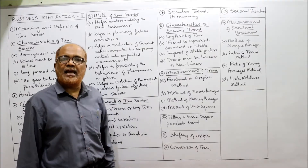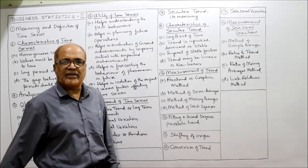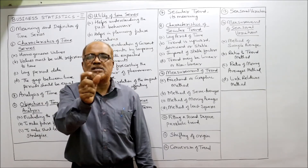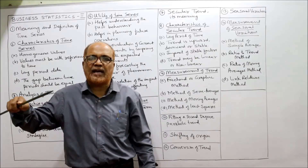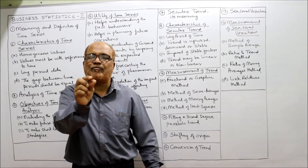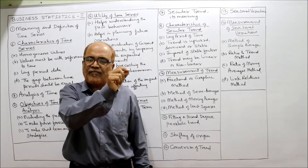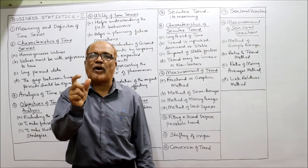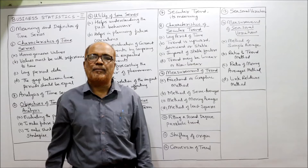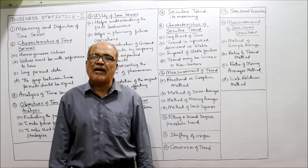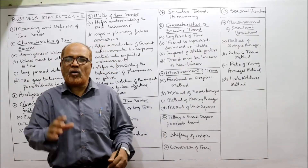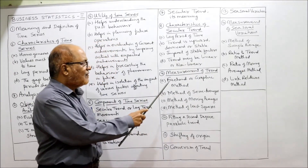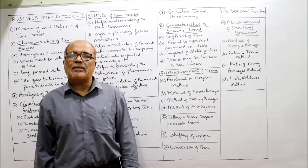For measurement of trend, we have four methods. The first is the freehand or graphic method. On a graph paper, we take year on the x-axis and the variable (e.g., sales) on the y-axis. After plotting all the points, we draw a freehand straight line such that equal numbers of points lie above and below the line. This gives the trend line — a crude method to get a bird's eye view of whether the trend is increasing or declining.